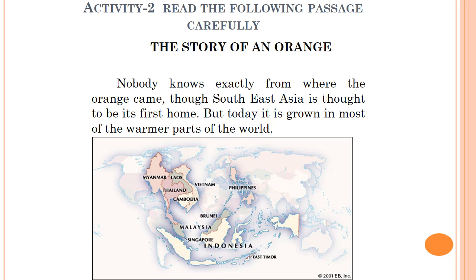Today the orange is grown in most of the warmer parts of the world. Southeast Asia consists of countries like Myanmar, Thailand, Malaysia, Indonesia, and so on. From here it transferred to India and then to other European countries. The warmer parts of the world today are regions lying in the tropical area near the equator, and these regions are also growing oranges in huge amounts.